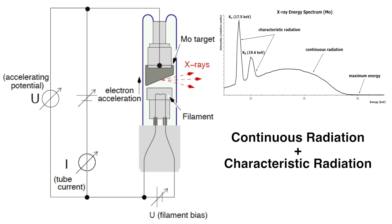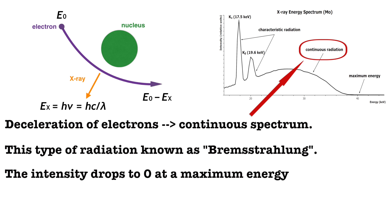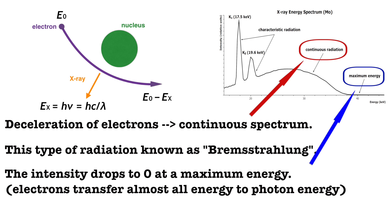X-ray output is plotted on graphs called spectra. An X-ray spectrum is continuous, and the intensity reaches zero at a certain maximum energy point. In addition to the continuous spectrum, depending on the accelerating potential, there may be discrete features superimposed on the spectrum. The continuous spectrum is due to deceleration of electrons hitting the target. This type of radiation is known as Bremsstrahlung. The intensity drops to zero at a certain maximum energy or minimum wavelength when electrons transfer almost all energy to photon energy.